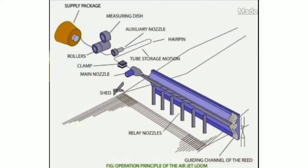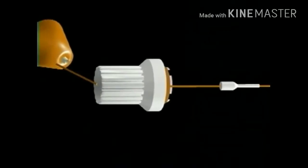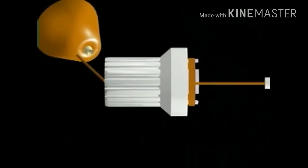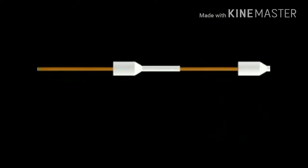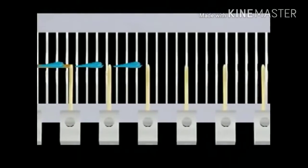Weft insertion is the process of transferring packages into the open shed and across the width of the machine. With this machine, air is used to accelerate and control the insertion of weft.